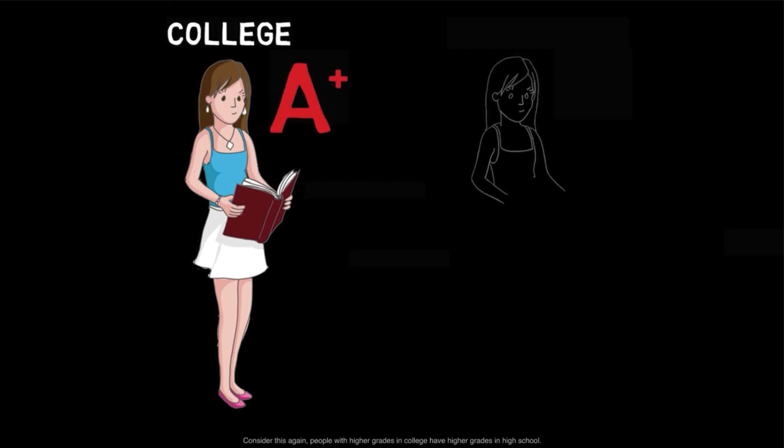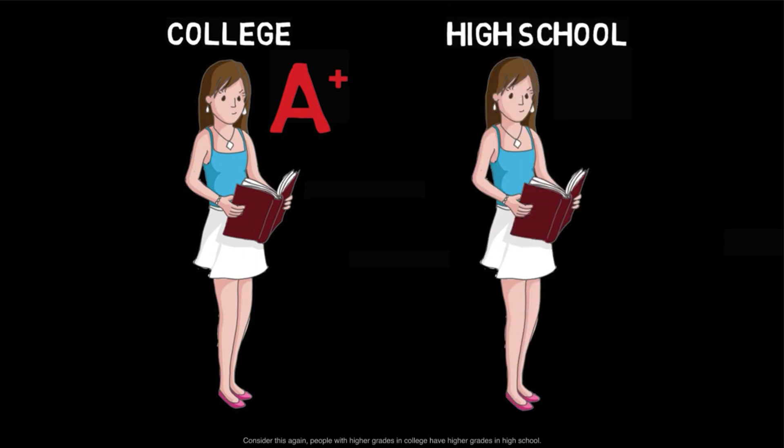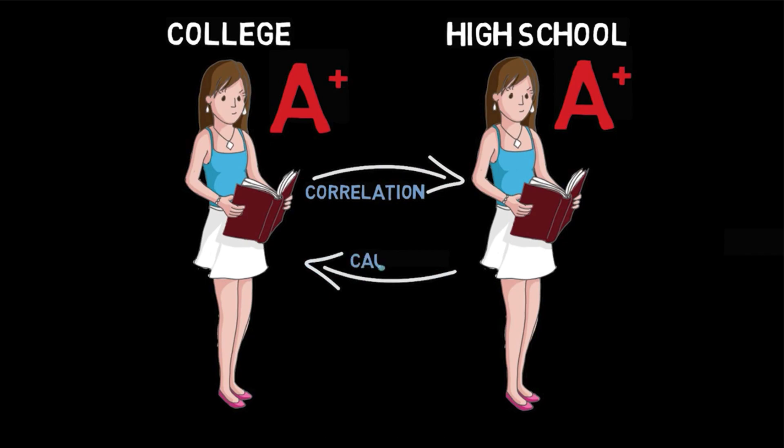So, let's consider an example where two events are positively correlated when neither causes the other. Consider this again. People with higher grades in college have higher grades in high school. Here, earning higher grades in college is positively correlated with earning higher grades in high school. Now, it's incorrect, as we've discussed, to claim that earning high grades in high school always causes someone to earn high grades in college.